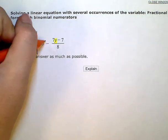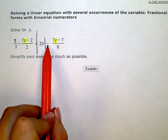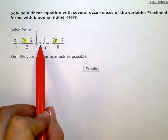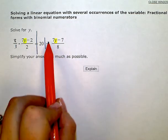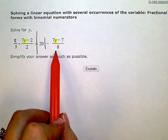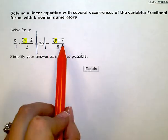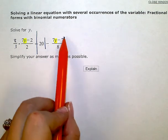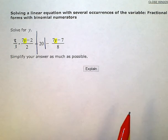On the right side, I have two terms. Terms are separated by plus and minus signs. The 20 is a term by itself, and then this big fraction is a term. The fraction bar is locking all of these elements together as one big term right now until I get rid of the big fraction bar.